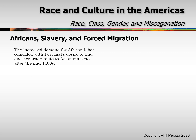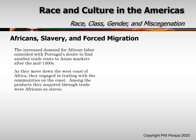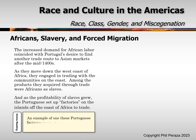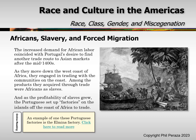The increased demand for African labor coincided with Portugal's desire to find another trade route to Asian markets after the mid-1400s. As they moved down the west coast of Africa, they engaged in trading with the communities on the coast. Among the products they acquired through trade were Africans as slaves. As the profitability of the slave trade grew, the Portuguese set up factories on the islands off the coast of Africa to trade. Here are pictures of the Portuguese arriving along the coast — the arrival of Europeans in Africa.